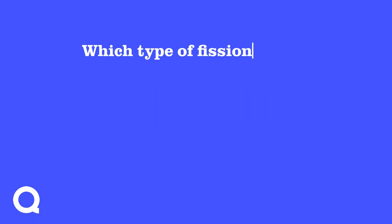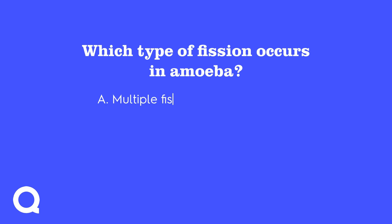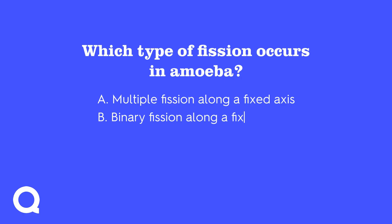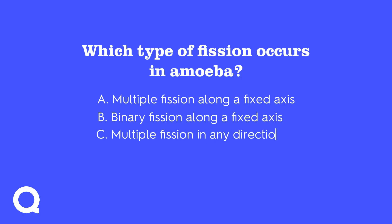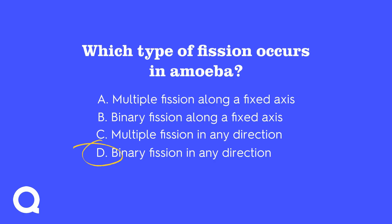Which type of fission occurs in amoeba? A. Multiple fission along a fixed axis. B. Binary fission along a fixed axis. C. Multiple fission in any direction. Or D. Binary fission in any direction. The answer is D — amoeba uses binary fission and can split along any axis.